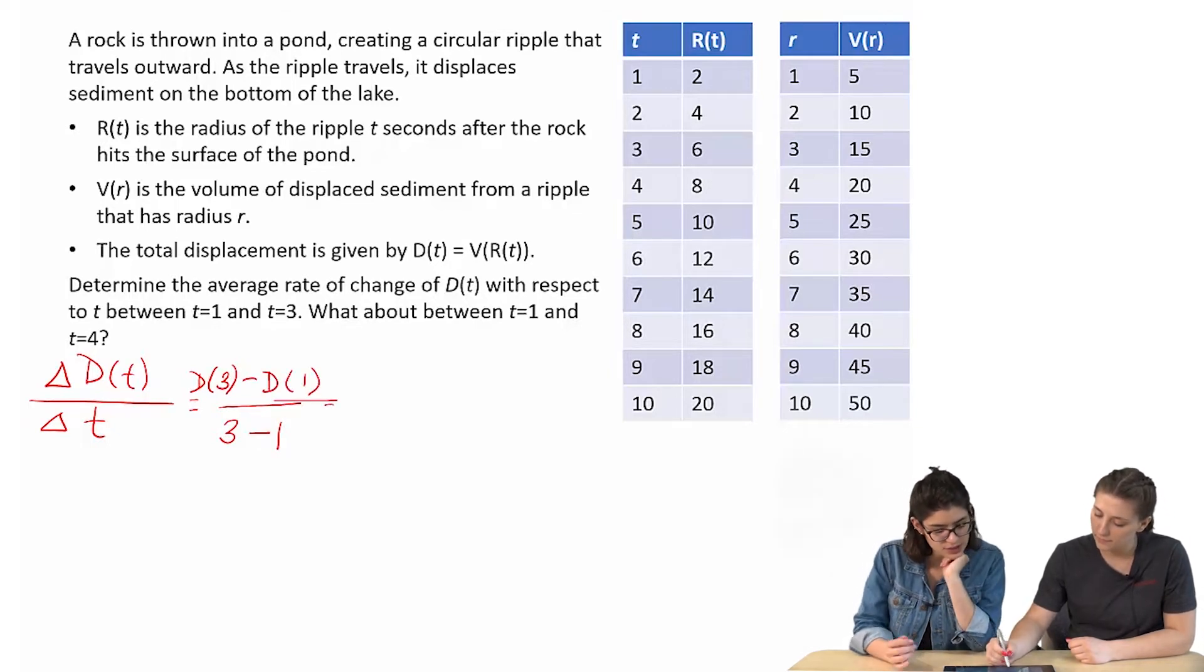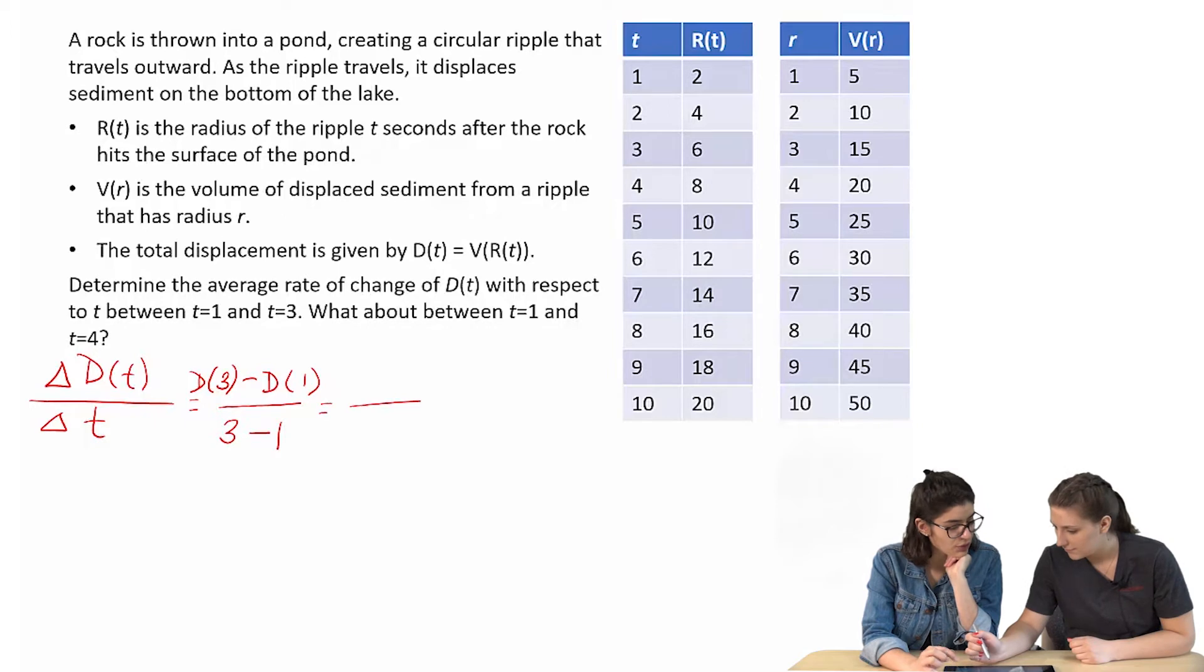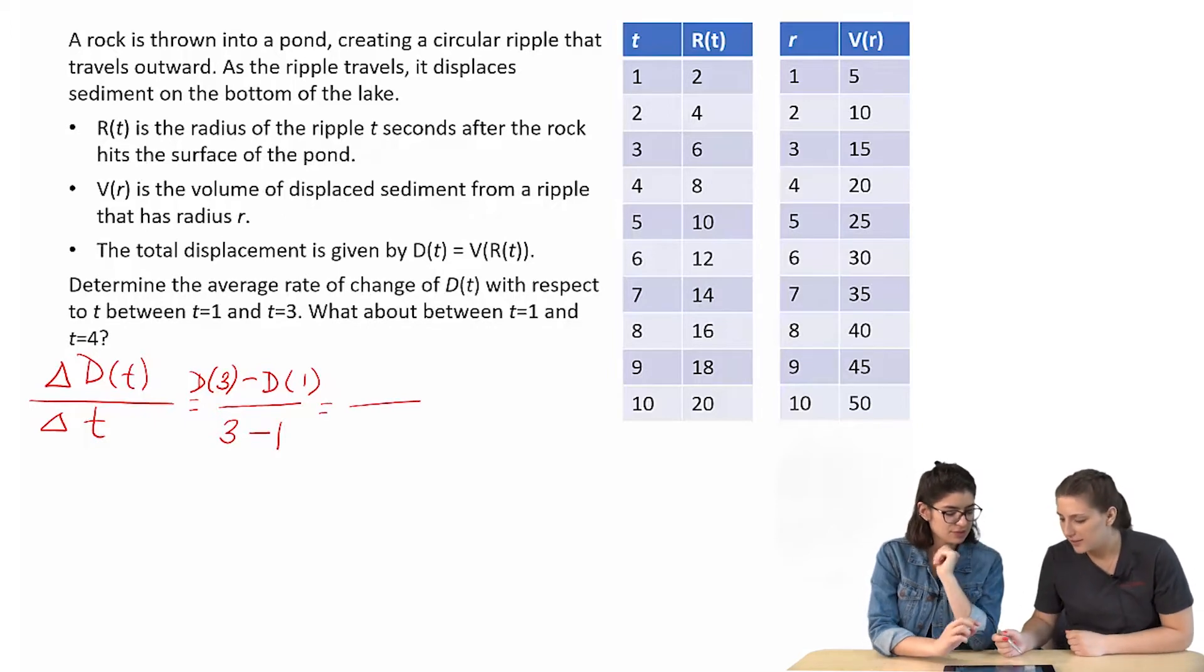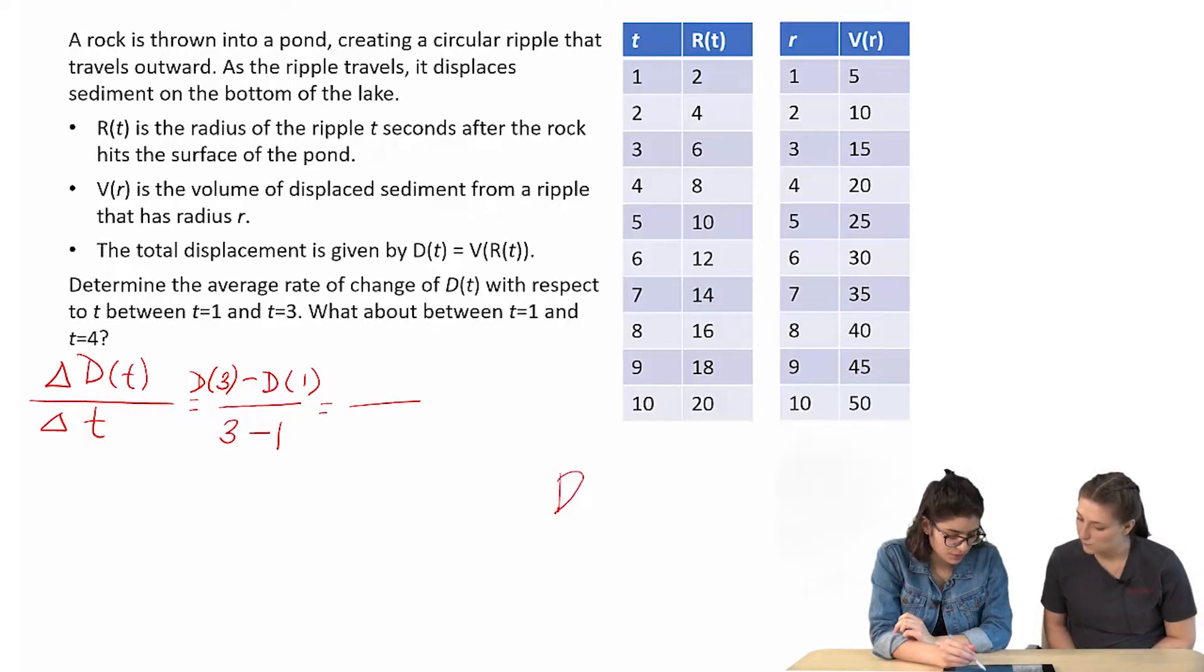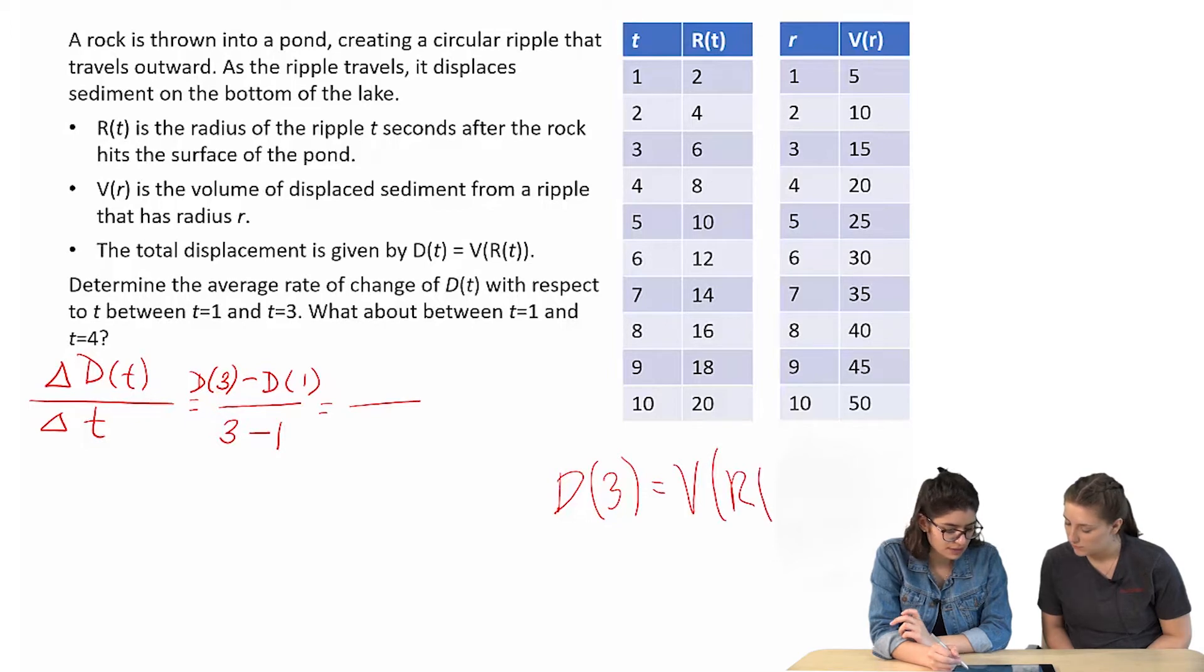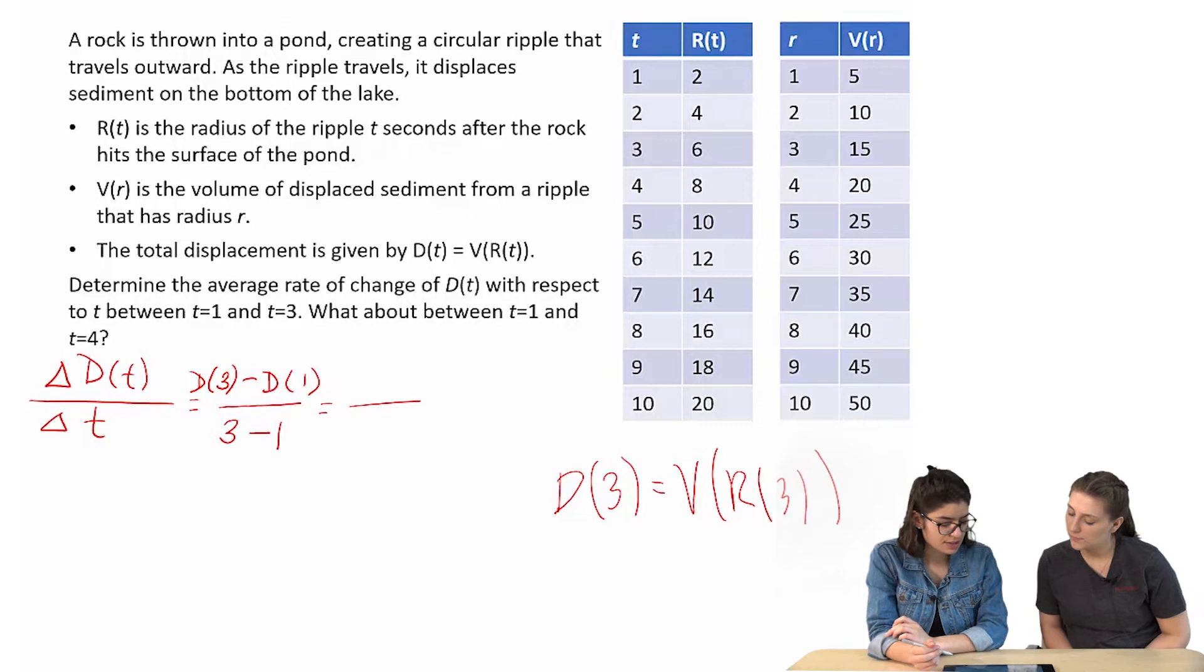And then D(3) you would just get 30. Wait, I don't know how you got that. Can I show you? Yeah. Okay. Let's see, D(3). D(t) is defined as V(R(t)). So in this case t is 3, so you put a 3 there. So since it's a composition of functions, you want to do the inside one first.